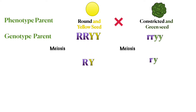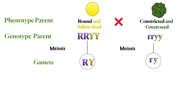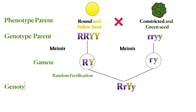The two pairs of alleles will segregate during the meiosis process, and only one allele is contained in a gamete. The homozygous dominant parent produces a gamete that contains only the dominant allele RY, while the homozygous recessive parent produces a gamete that contains only the recessive allele ry.